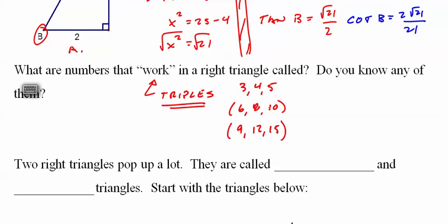But other triples are 5, 12, 13, 8, 15, 17, 7, 24, 25, 9, 40, 41. And they go on and on.